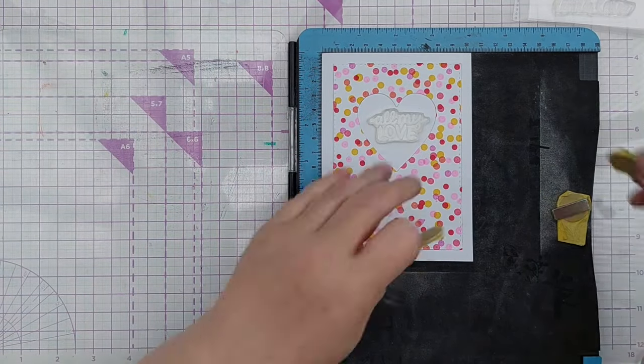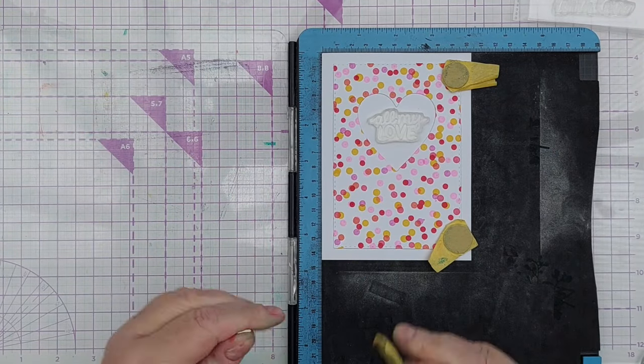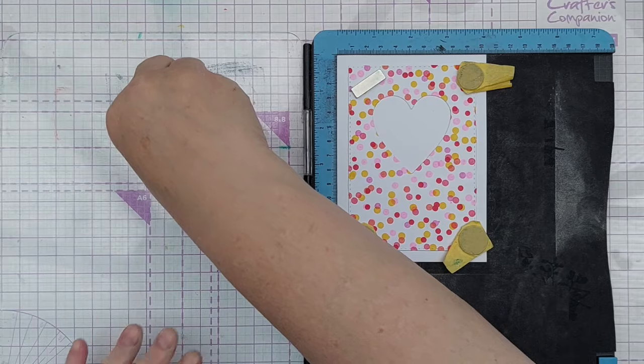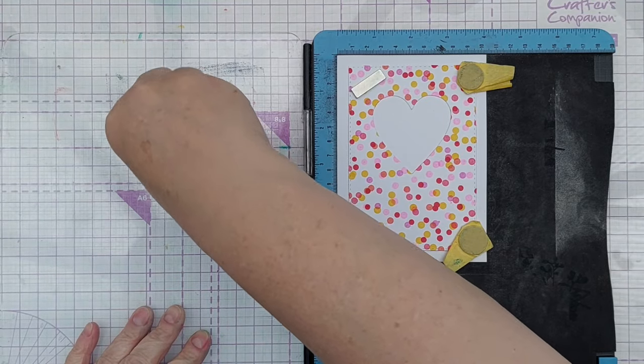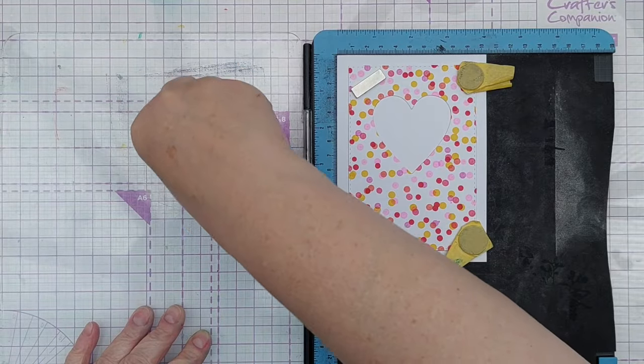I then removed the heart and put the card in my stamp positioner and used Memento Tuxedo Black ink to stamp my sentiment, which says all my love. And that really stands out amongst all that color and works well with the heart design.